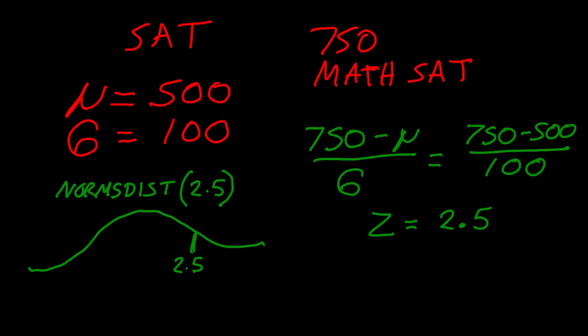If we want to know how many people scored a 750 or better, we would like to have this area, which is going to be 1 minus norm s dist of 2.5. Norm s dist of 2.5 is 0.9938.